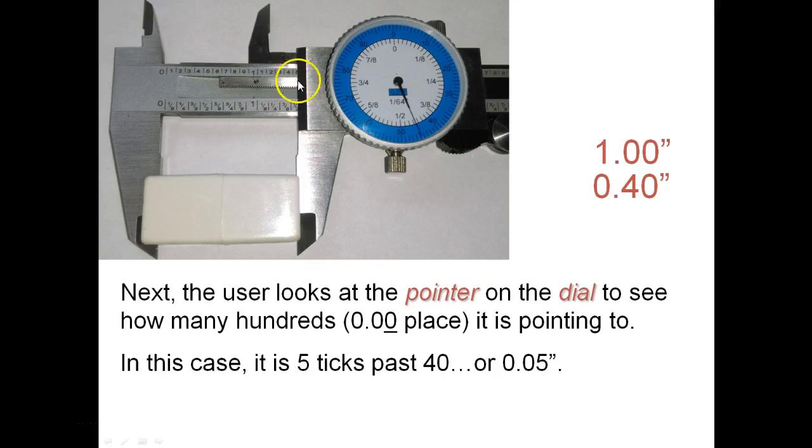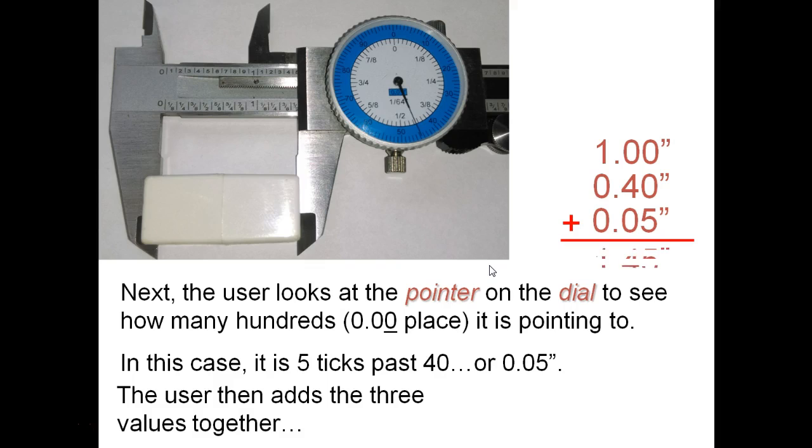Then the last step here is then count each tick. And again, there's going to be 10 ticks between each of these. So if you start counting these, this would be your hundredth spot. So 4, 1, 2, 3, 4. Now this one here, 1, 2, 3, 4. And it's almost to the 5. I'm going to count this one as 5 on that spot. So in this case, it's just 5 ticks past the 40 or .05. You add those up and you'll get 1.45.